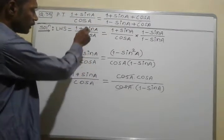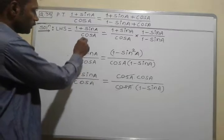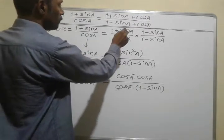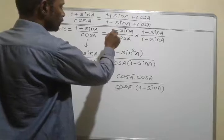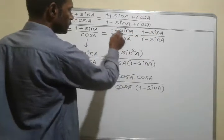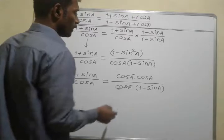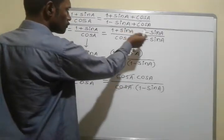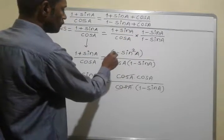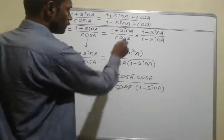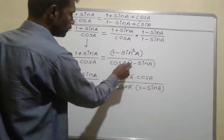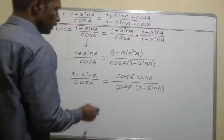So (1 + sinA) / cosA multiplied by (1 − sinA) / (1 − sinA). In the numerator, (1 + sinA)(1 − sinA) uses the identity (A + B)(A − B) = A² − B², giving us (1 − sin²A). The denominator is cosA × (1 − sinA).